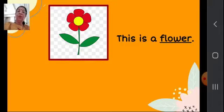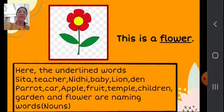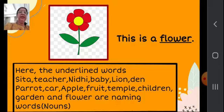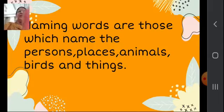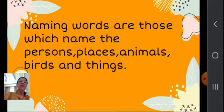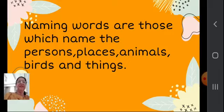Now here you will come to know why I have underlined all these. The underlined words are: Sita, teacher, Nidhi, baby, lion, den, parrot, car, apple, fruit, temple, children, garden, and flower. What are these? These all are naming words — these are nouns. So what are nouns? Nouns are those which name the persons, places, animals, birds and things.